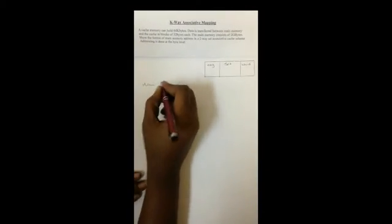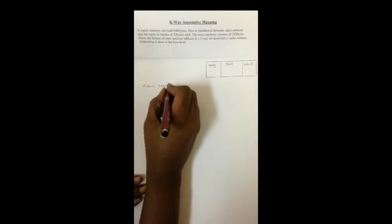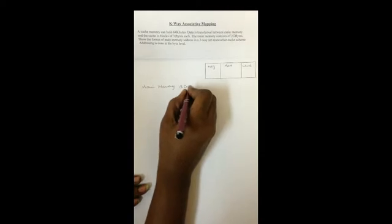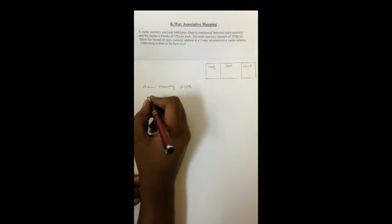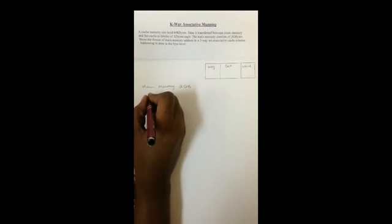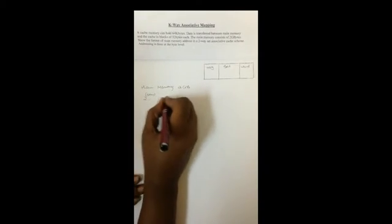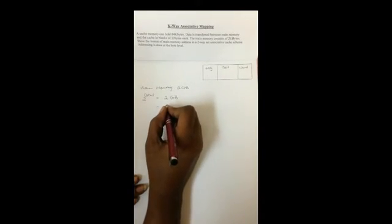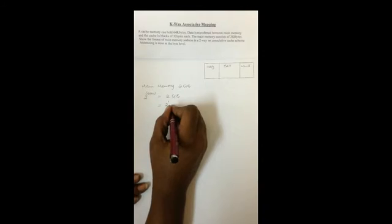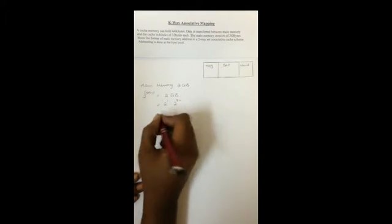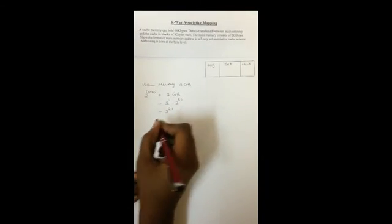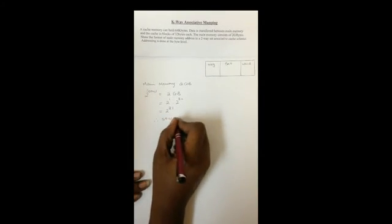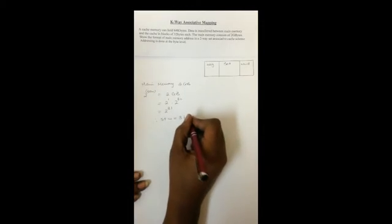Addressing is done at the byte level. We would have identified that our main memory is 2 gigabytes. We need to find S plus W, and we know 2 to the S plus W is equal to 2 gigabytes. We know that 2 gigabytes would become 2 to the 1 times 2 to the 30, making that 2 to the 31. Therefore, S plus W is equal to 31 bytes.